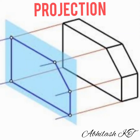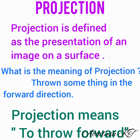What is projection? Projection is defined as the presentation of an image on a surface. The word projection means to throw something in the forward direction — to throw forward. Projection is the technique used to represent 3D objects in 2D.